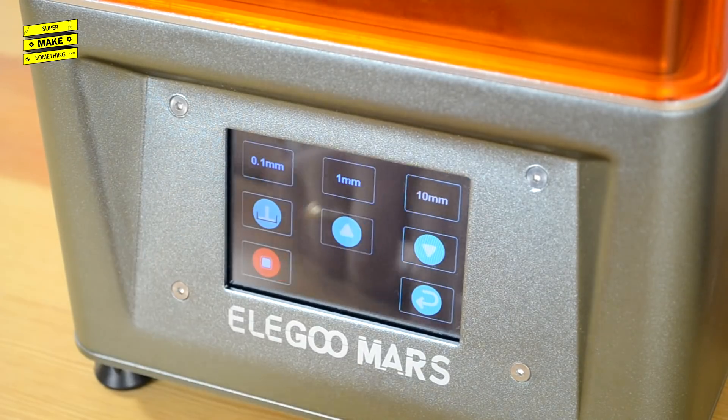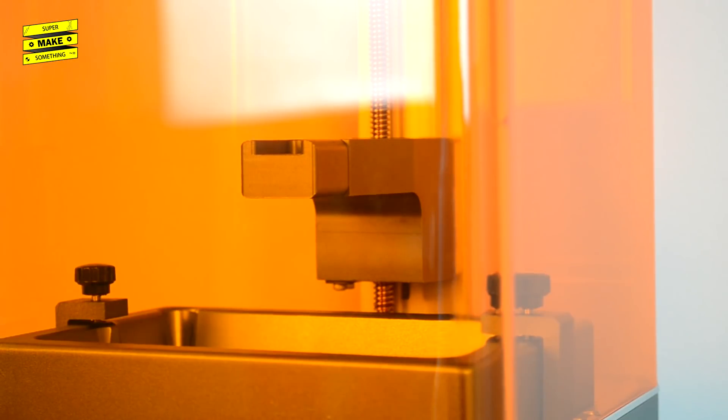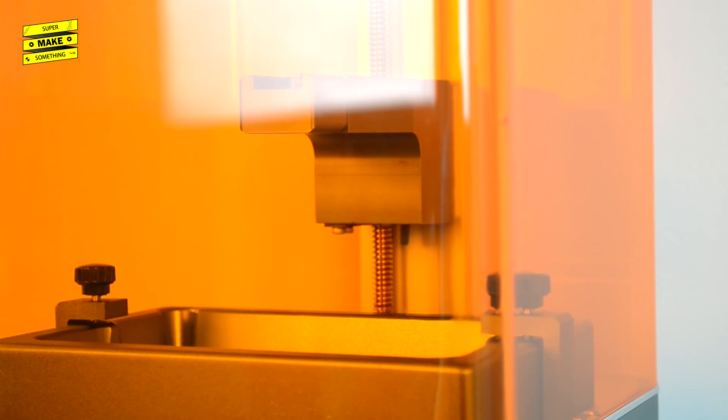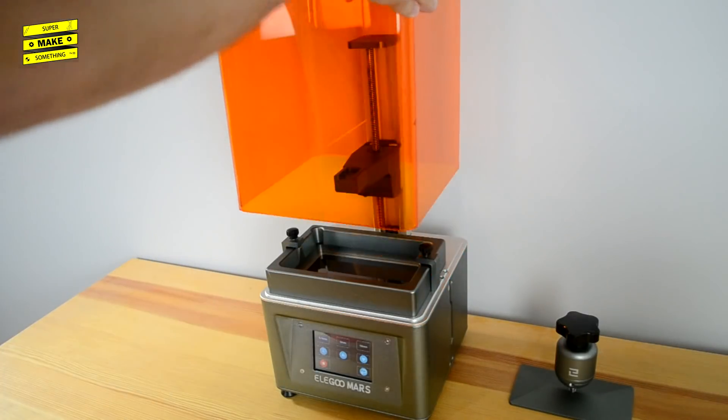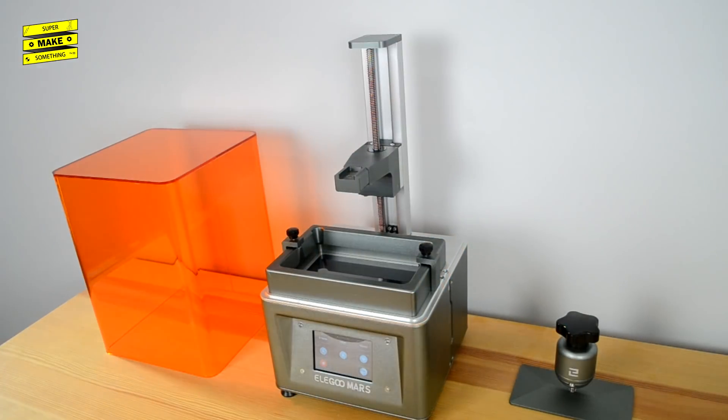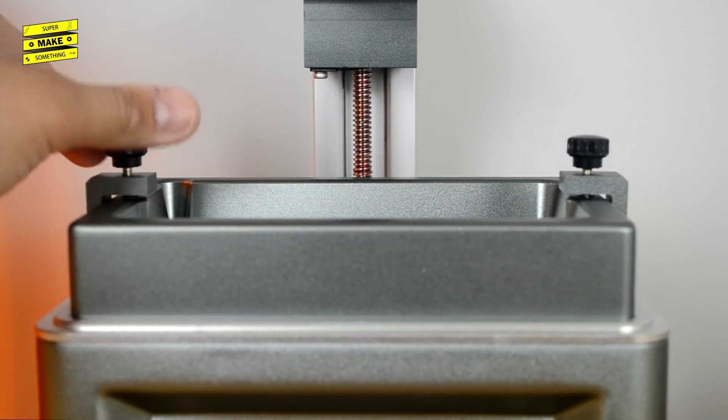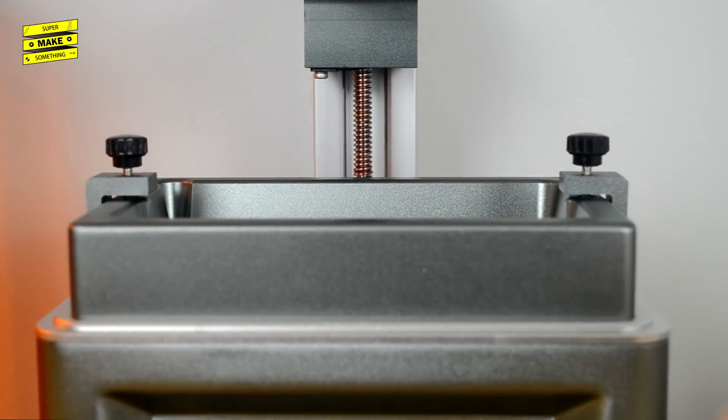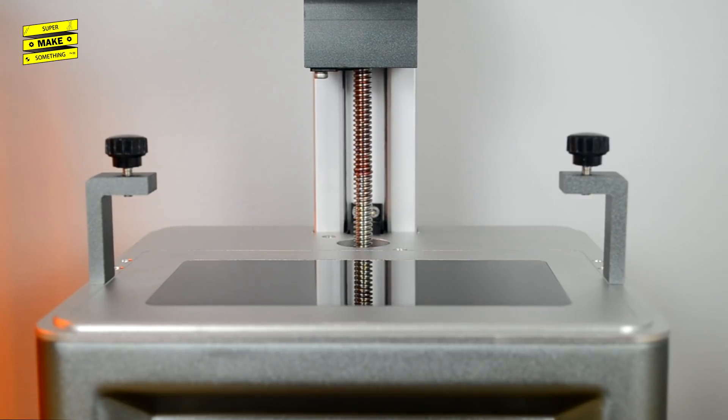The next step was to install the build platform, so I went into the tools menu and used the manual jog option to move up the printer's Z-axis. I then removed the printer's orange cover and loosened the thumbscrews holding the print vat in place in order to remove it from the printer. Removing the vat also exposed the LCD screen in the base of the unit, which is used to mask off the UV light to create each print layer.